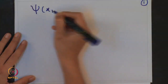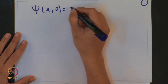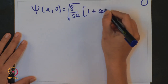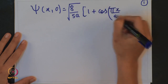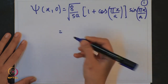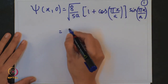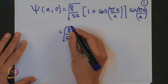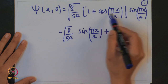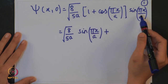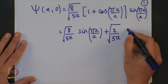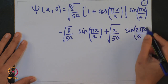The time-independent wave function is given to us. In the next step we will try to write this in a simplified way — I will just open up these brackets. This gives me π x/a, and I will simplify cos θ sin θ: 2 cos θ sin θ gives us sin 2θ. So I will write it in the form sin(2π x/a).